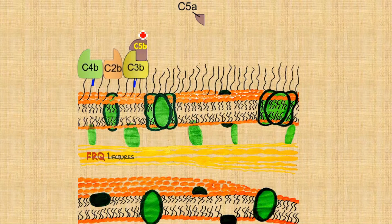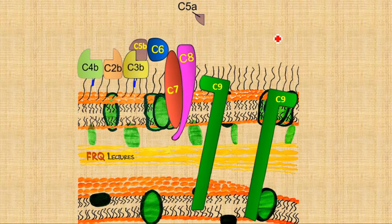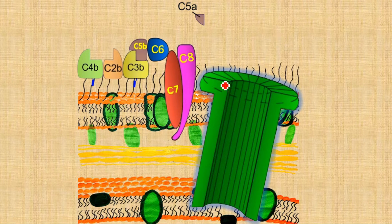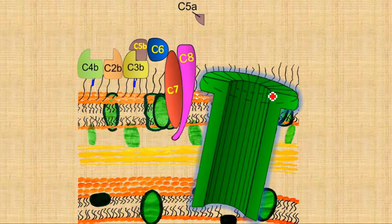C5b will recruit all the other complements in turn — first it recruits C6, then C7 is recruited, then C8, and finally a large number of C9 units are recruited. These C9 units unite or combine to form a channel. Many C9 units come together and form a complex, a channel — in fact, this is a pore.